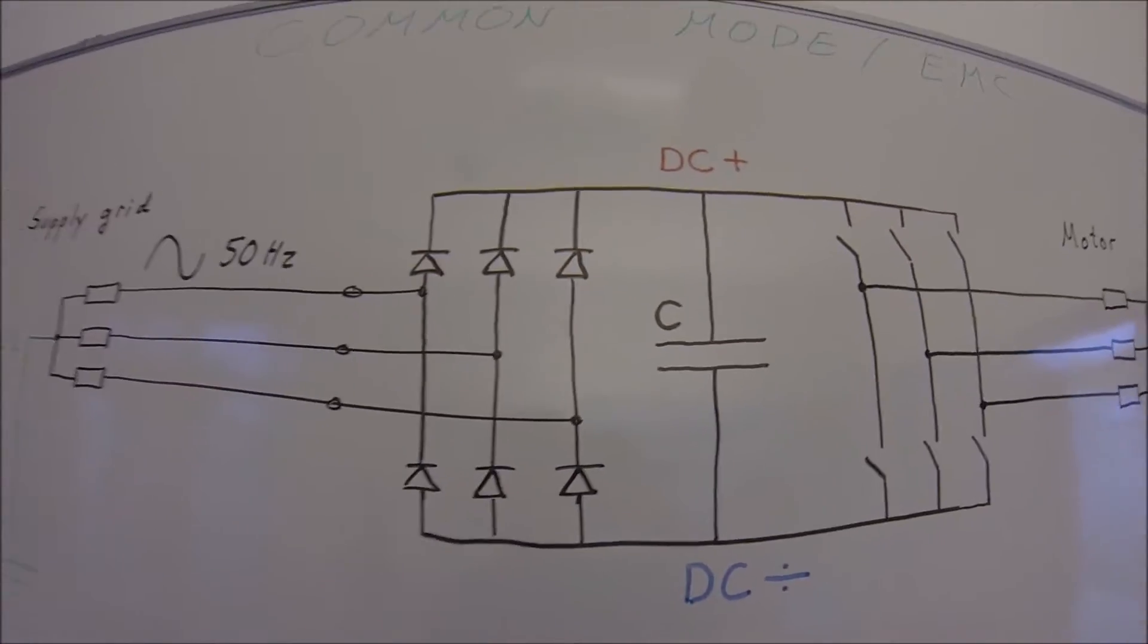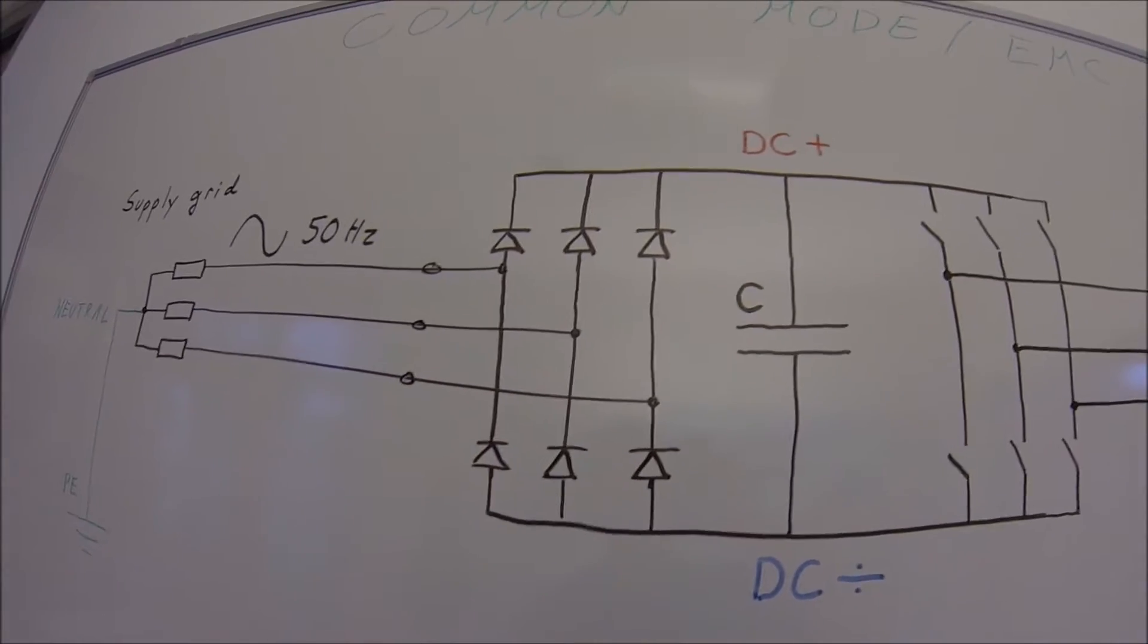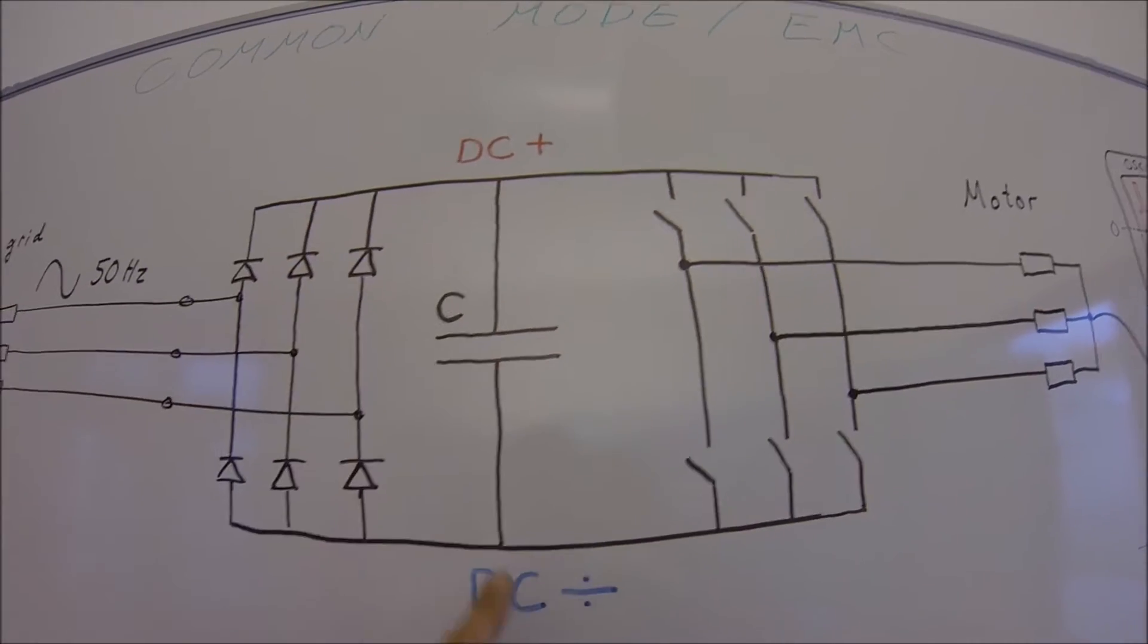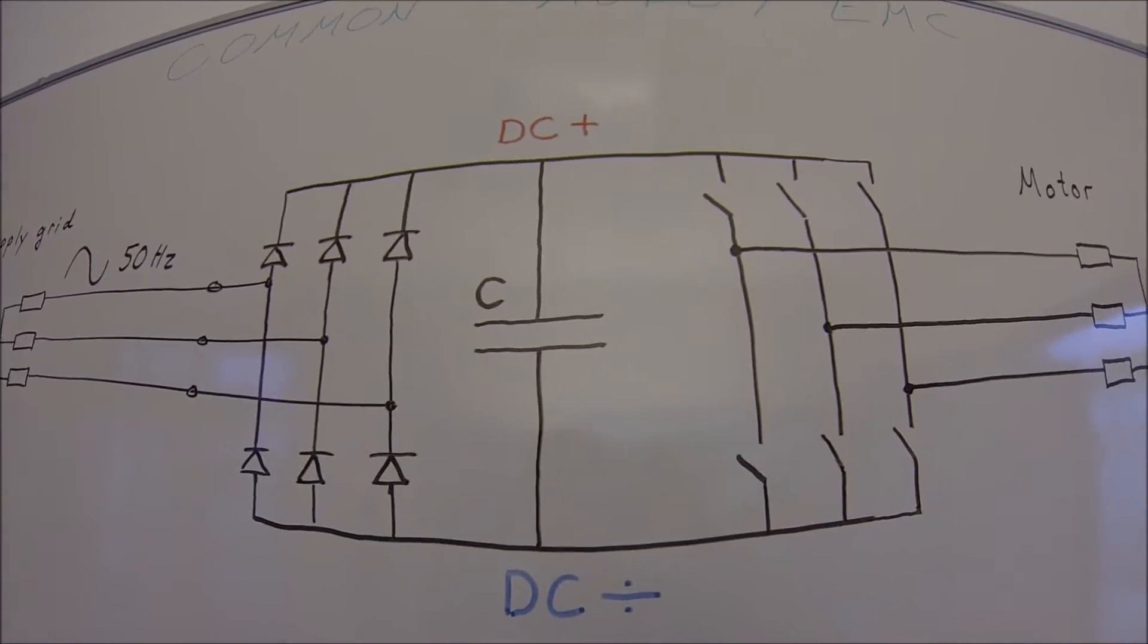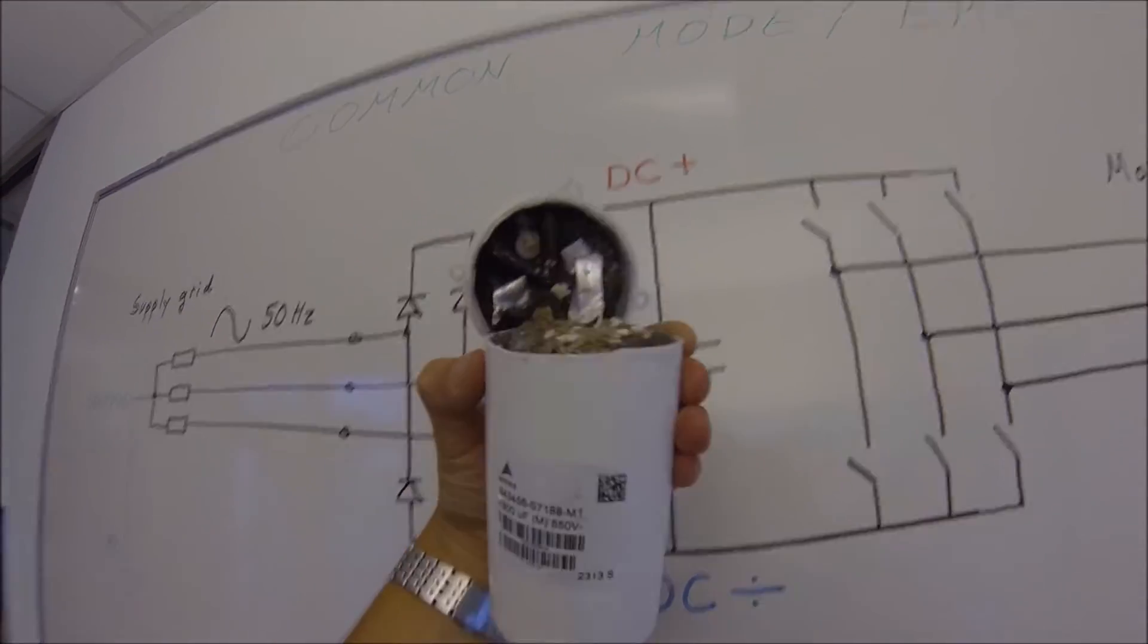What happened in the frequency converter is that we use a diode rectifier to rectify the AC into DC voltage. We store this energy and voltage on big capacitors, looks like this.